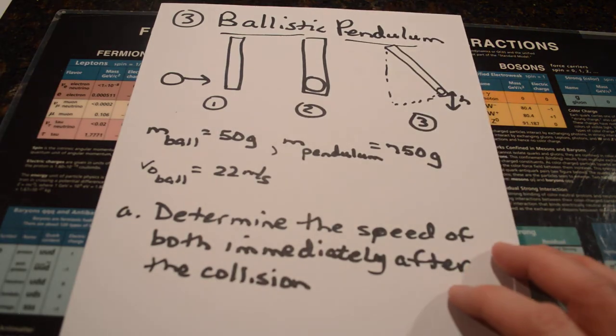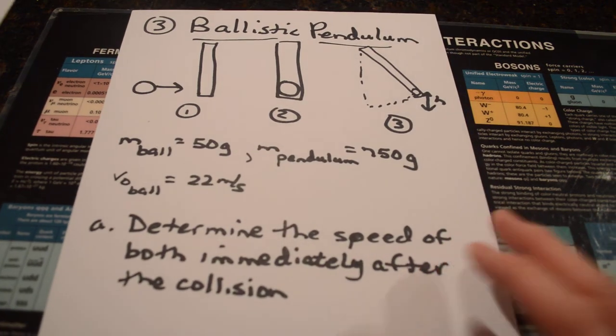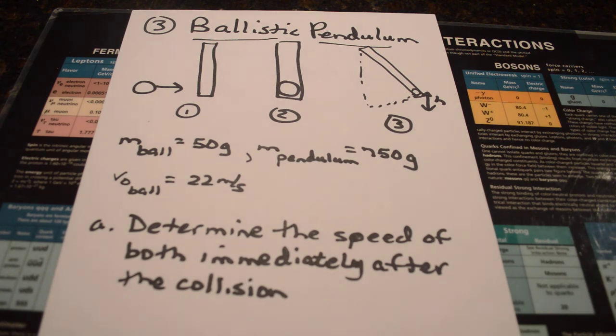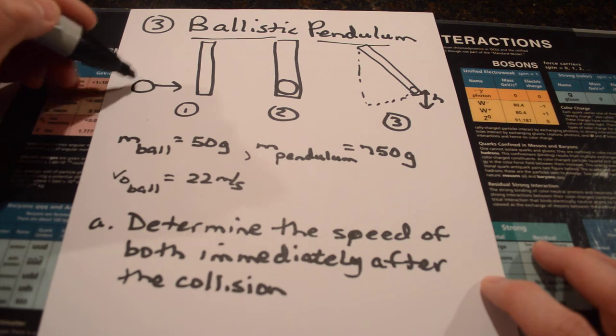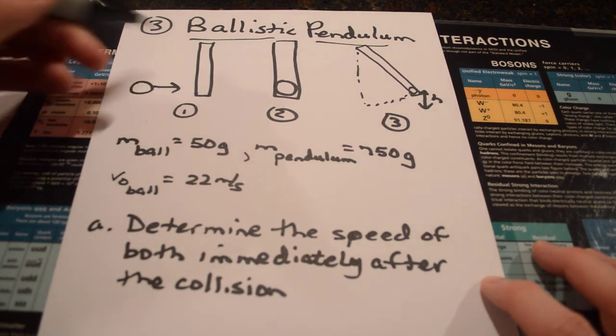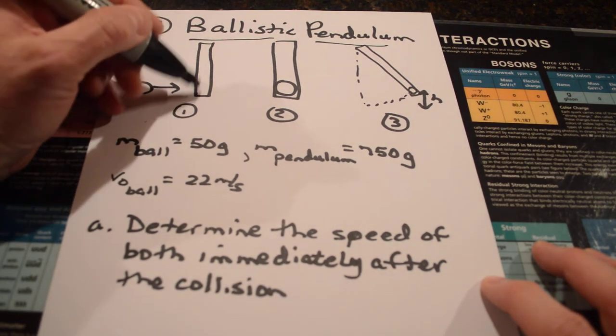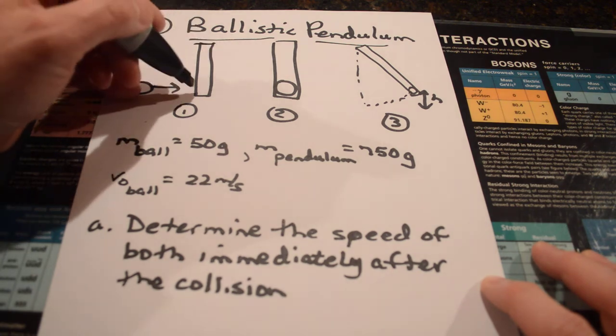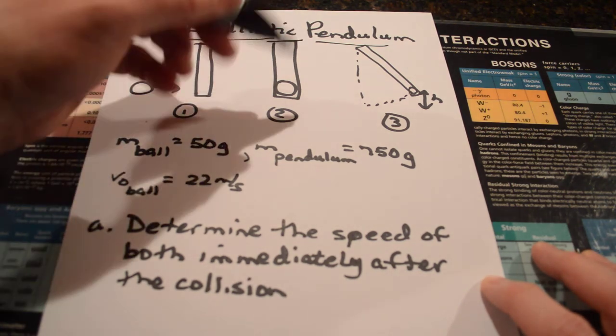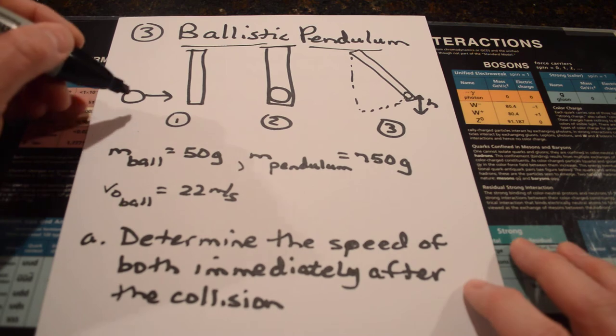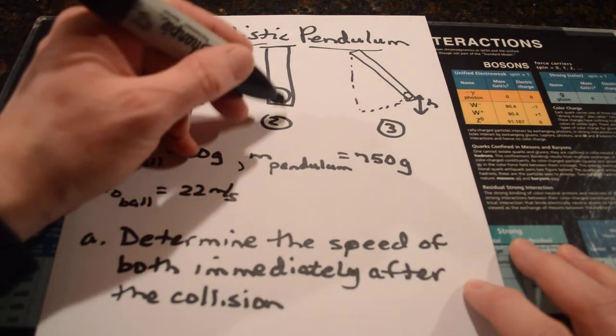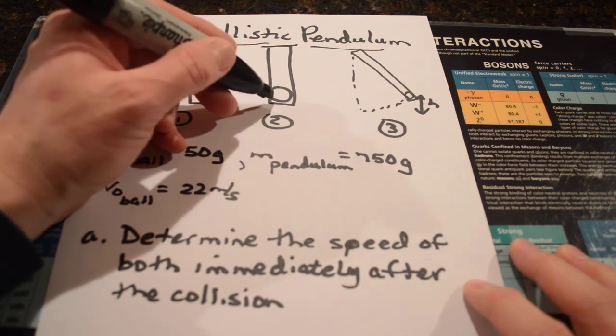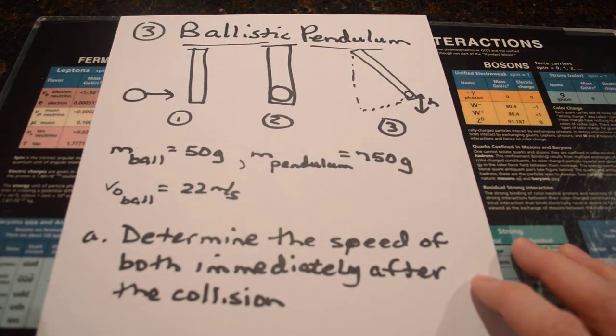Last problem for this particular assignment was a ballistic pendulum. That was the situation where you have a sphere launched. So, you have a ball launched into something that has the ability to then swing. So, it's a pendulum and it swings up. So, there are three steps. First, the ball is moving. Then, there's a collision and it embeds itself in it. And then, it raises up to a certain height.